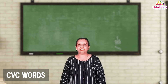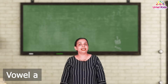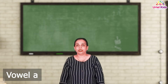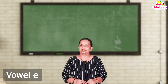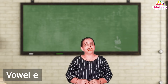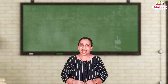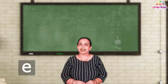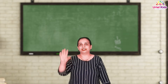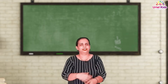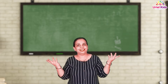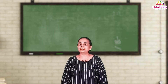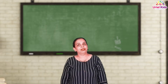So we have done CVC words with the vowel A in the middle. In this video we are going to do CVC words with the vowel E in the middle. So can you tell me the short vowel sound for A? It is A. And the short vowel sound for E is E. Great. So shall we use the tapping or the chopping method? You can use whatever you want, whatever you like, whatever is fun for you. Great. So let's start with CVC words with the vowel E in the middle. Okay?